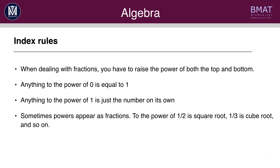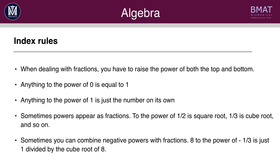Sometimes they'll give you powers as fractions. If something is to the power of a half it means it's the square root — so 4 to the power of a half is the square root of 4, which is 2. Similarly, a third power is the cube root and so on. Finally, sometimes you can combine negative powers with fractions. So if they give you 8 to the power of minus one third, this means 1 divided by 8 to the power of one third, which is the same as 1 over the cube root of 8.